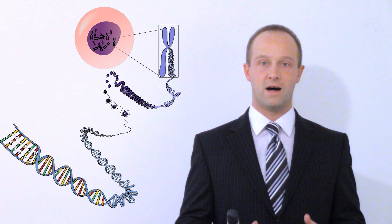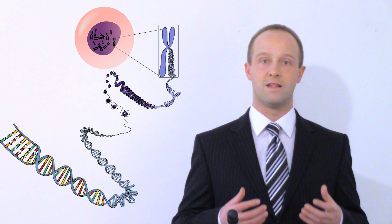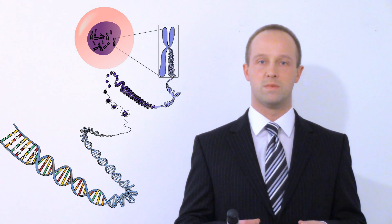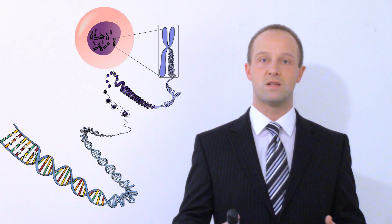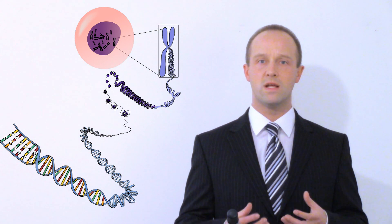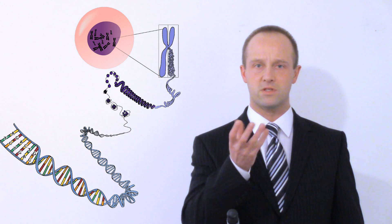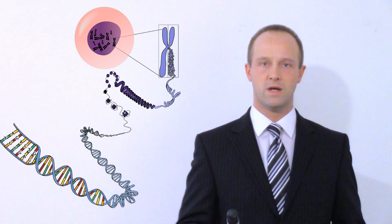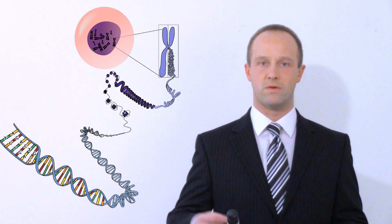Before we really start talking about inheritance, we need to talk a little bit about our DNA. Our DNA is arranged into large molecules known as chromosomes. And those chromosomes, if you stretch them out, they're a really, really, really long double helix — that's a double spiral shape of DNA, coiled round and round.